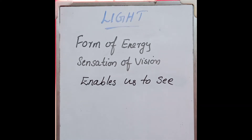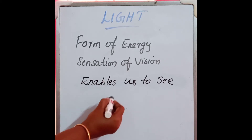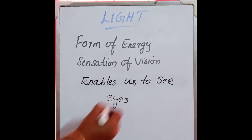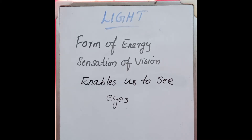Light is a form of energy. It produces the sensation of vision. We see things with the help of eyes. Eyes help us to see things. This is the most important sense organ — among the 5 sense organs, eyes are the most important.